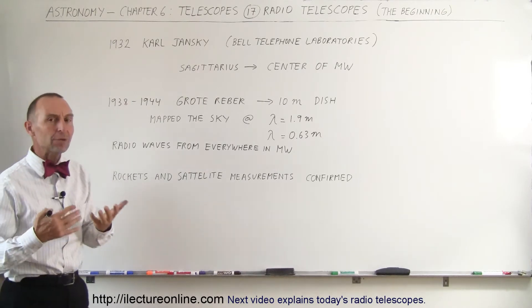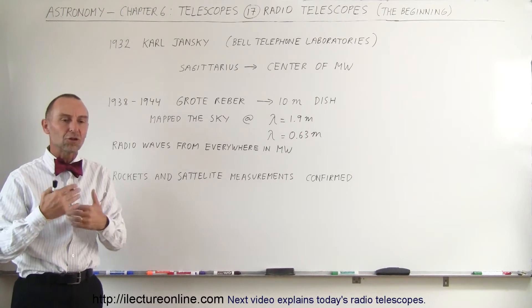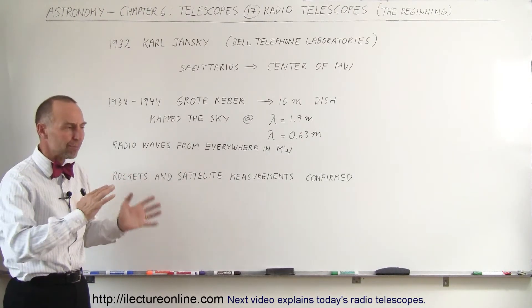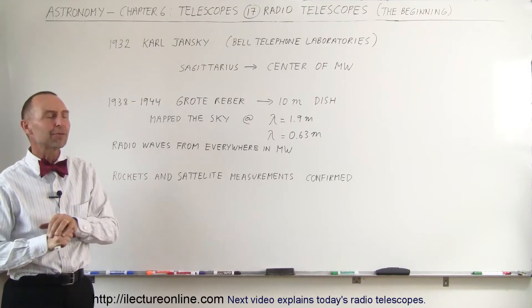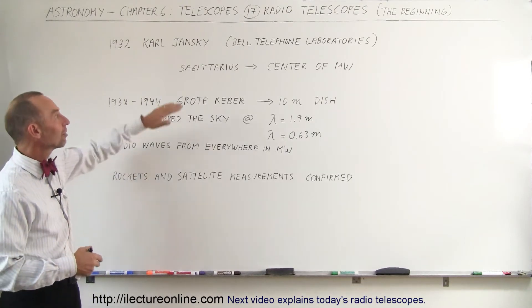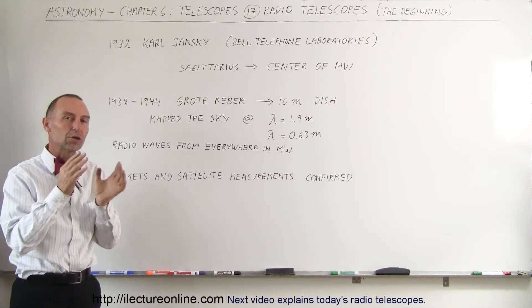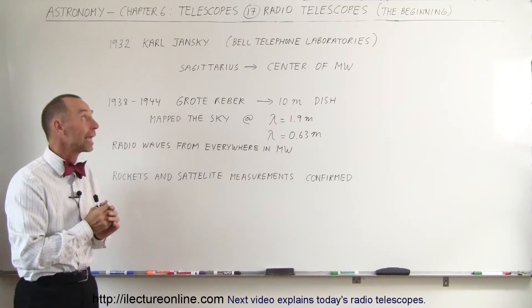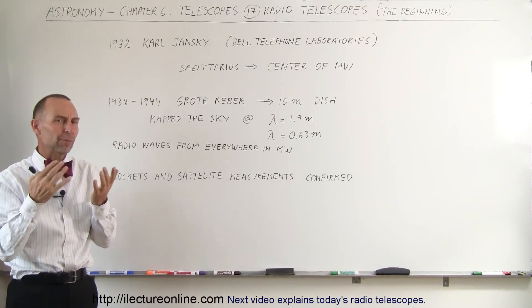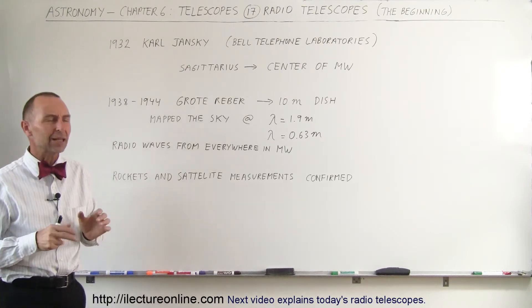He built a pretty primitive radio telescope and started using it. They started noticing some radio interference and began measuring where this interference appeared to be coming from. They noticed that the interference was strongest when the constellation of Sagittarius was in the sky — that's looking towards the center of the Milky Way galaxy — so it began to connect the idea that this interference was coming primarily from the center of our Milky Way galaxy.